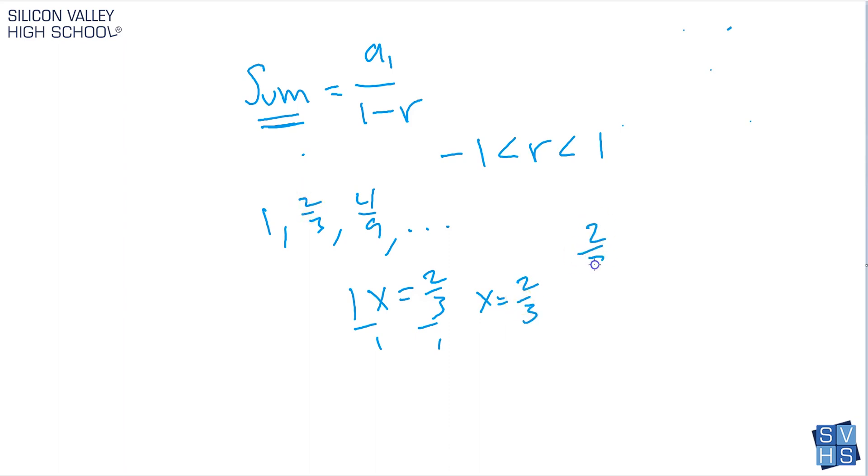Let's take the next guy. 2 thirds times, I have no idea, is 4 over 9. Here, you're basically, if you remember your algebra, you're going to multiply by the reciprocal, times 3 over 2, to get this gone. x equals, that's 3, that's 2, 2 thirds.